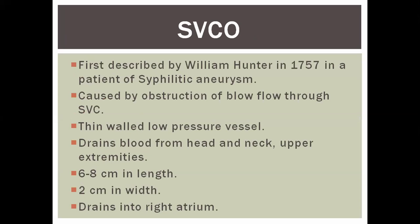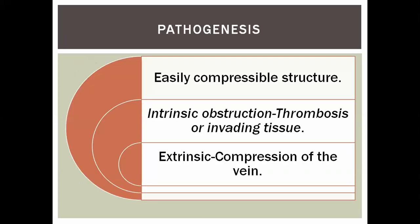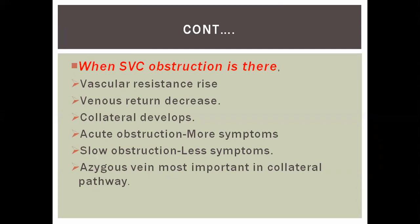Moving to cardiac emergencies. Superior vena cava obstruction (SVCO), first described by William Hunter, is caused by obstruction of blood flow through the SVC, which drains blood from head and neck, upper extremities, and upper thorax. It is a low-pressure vessel, susceptible to external compression, internal thrombosis, or invasion by tumor. When obstruction occurs, collaterals develop — often at the level of the azygos vein — vascular resistance rises, and venous return decreases. In acute obstruction, symptoms are more severe, but if it develops gradually, collaterals open up and symptoms are less pronounced. The azygos vein is the most important collateral pathway.